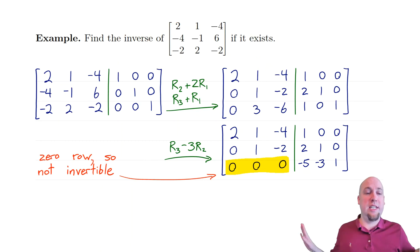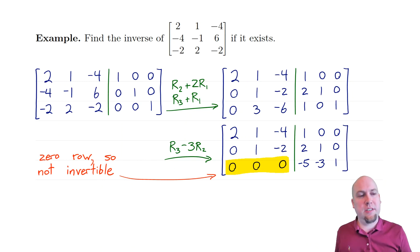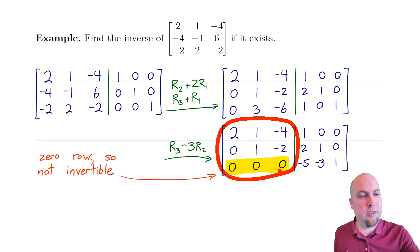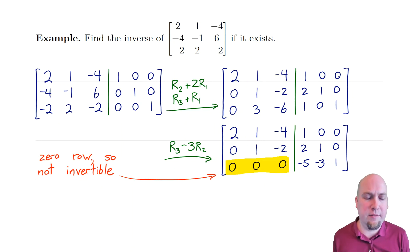You don't have to reduce it all the way to reduced row echelon form. As soon as you get a zero row, you know the matrix is not invertible — so you're done. You don't need to find what the resulting matrix is on the right, because we're looking for the inverse, but the inverse doesn't exist.